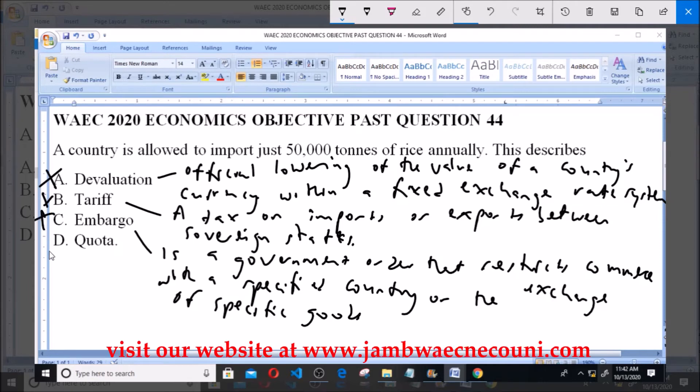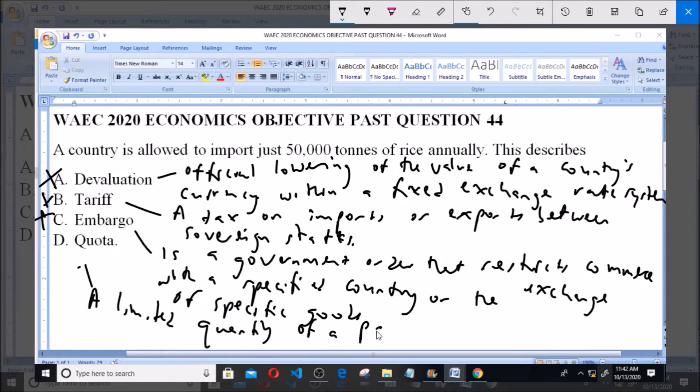So option C embargo is not the correct answer. Now option D, which is quota, refers to a limited quantity of a particular product which under official controls can be produced, exported, or imported.